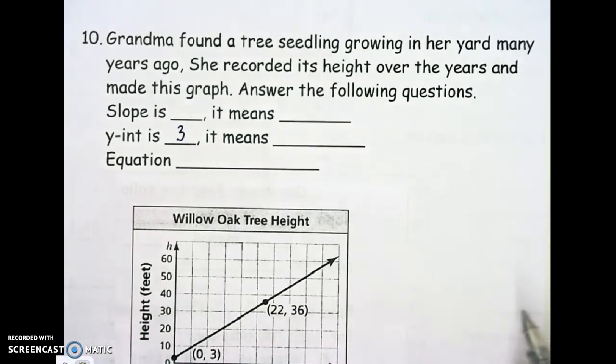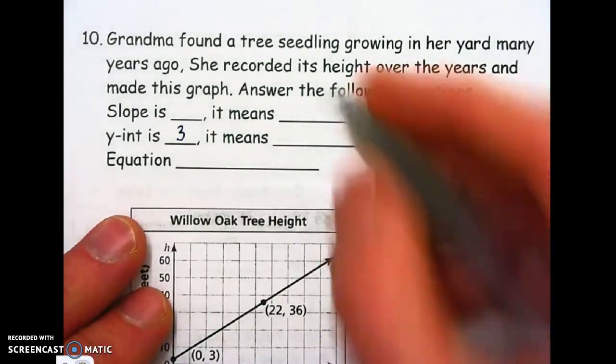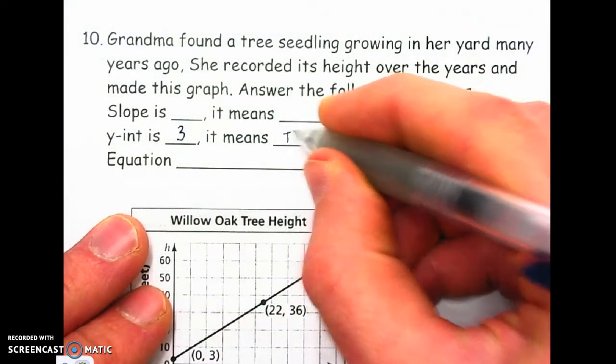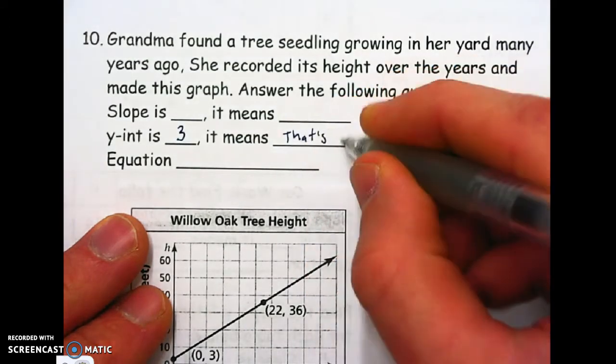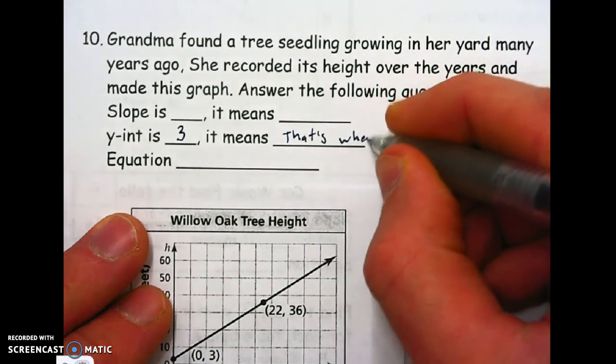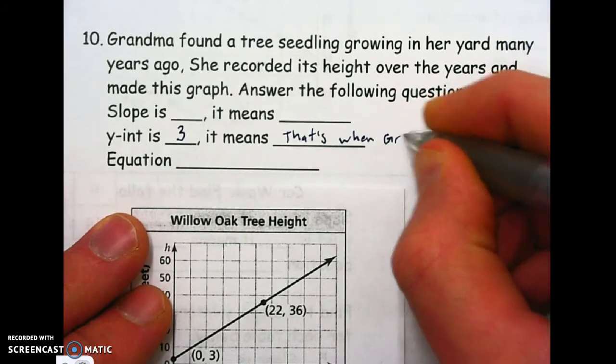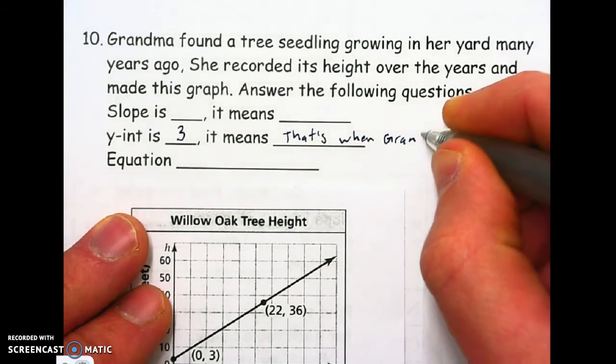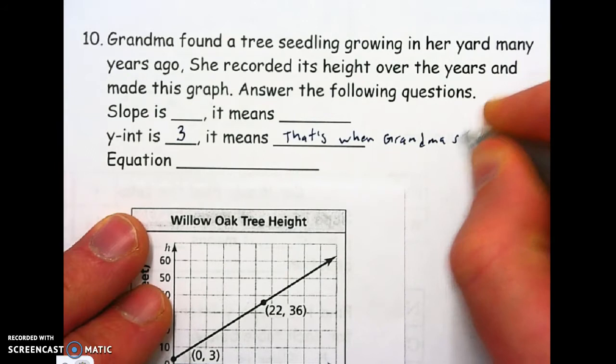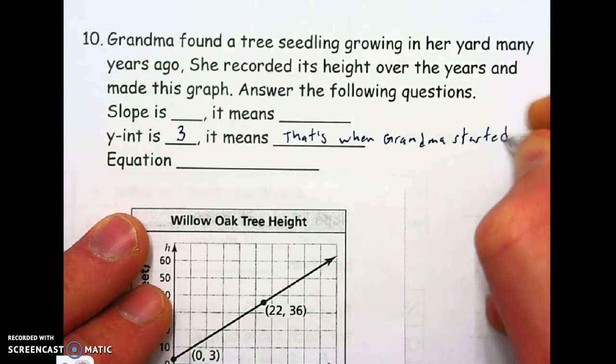And we're going to write in the meaning for what that means. At time 0, why is it 3? It means that's when Grandma started recording.